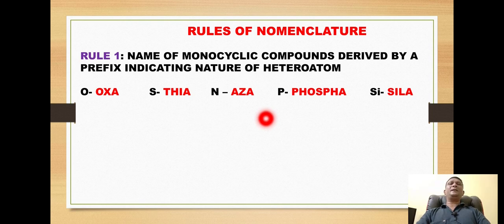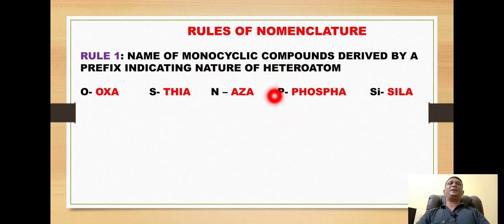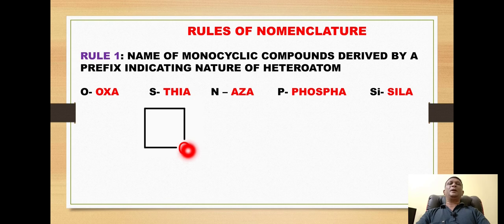In the prefixes, we use prefixes for the heteroatom. For example, for oxygen we use 'oxa', for sulfur we use 'thia', for nitrogen it is 'aza', for phosphorus it is 'phospha', and for silicon it is 'sila'. For example, if we look at this ring containing oxygen, we will use the prefix 'ox'.